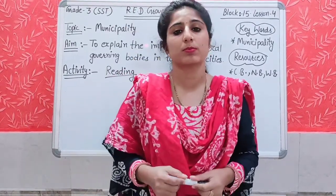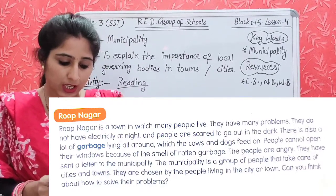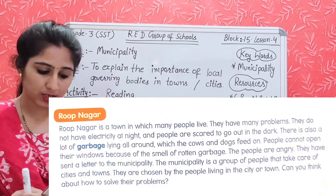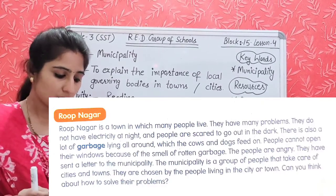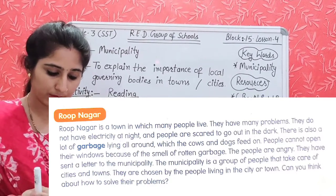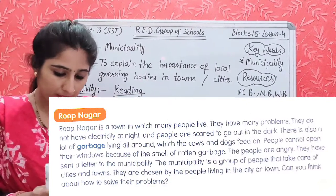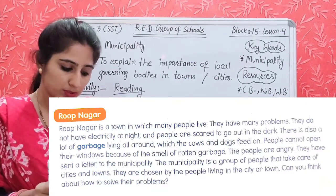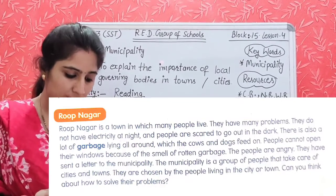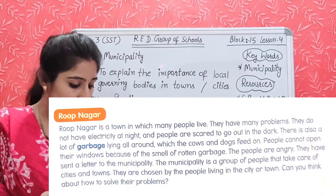Now open your content book, page number 37. Rupanagar is a town in which many people live. They have many problems. They do not have electricity at night and people are scared to go out in the dark. There is also a lot of garbage lying all around which cows and dogs feed on. People cannot open their windows because of the smell of rotten garbage. The people are angry and have sent a letter to the municipality. The municipality is a group of people that take care of cities and towns. They are chosen by the people living in the city or town. Can you think about how to solve their problems?